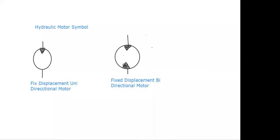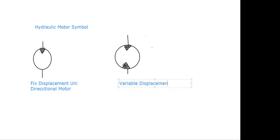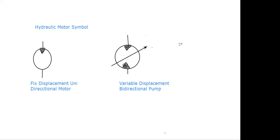Again we are going to see the variable displacement bidirectional motor. For variable displacement bidirectional, only the arrow symbol is added to the previous symbol. This becomes the symbol for the variable displacement bidirectional motor.